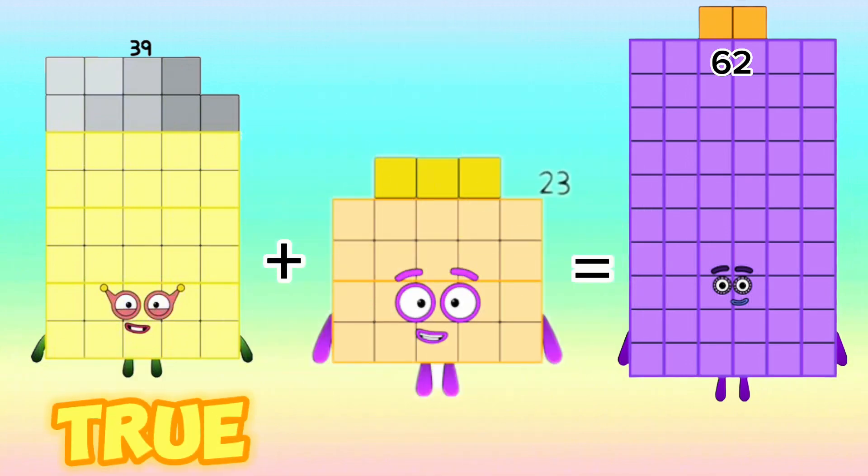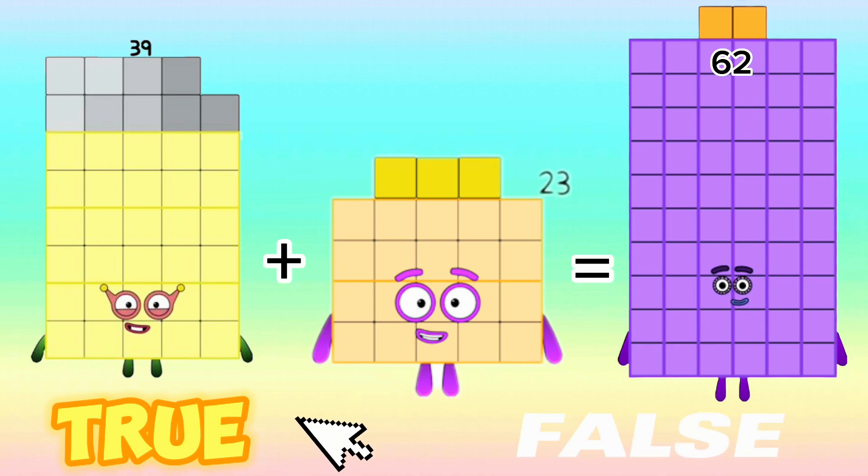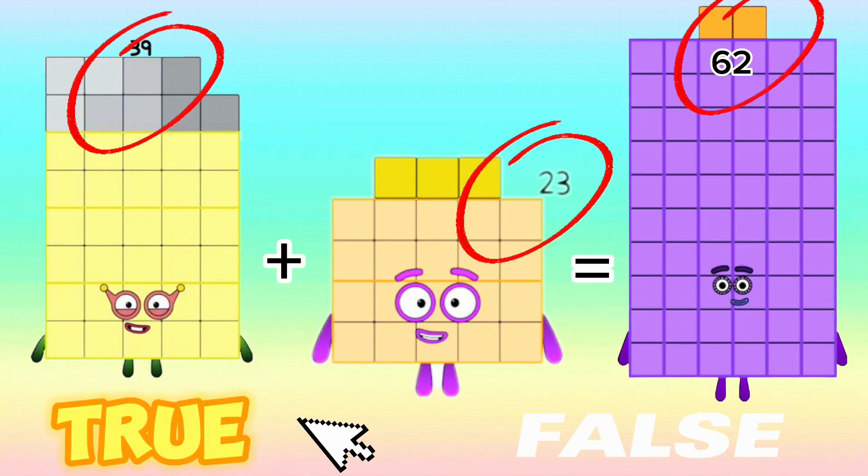Is it true or is it false? If your answer is true, then you are right. 39 plus 23 is equals to 62.